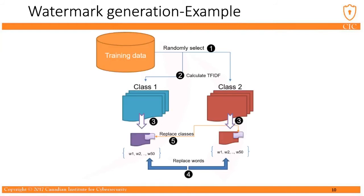In this slide, we present an example to clarify our algorithm. Let's say we have a dataset with two classes, one and two. First, we calculate the document frequency of each word in the corpus. Then we randomly select n documents from each class. After normalization and stop word removal, we calculate TF-IDF scores of all terms in selected documents. Then we randomly select documents from each class. Finally, we exchange their words and labels.